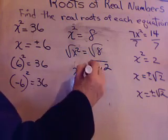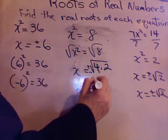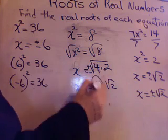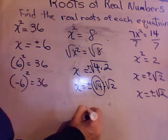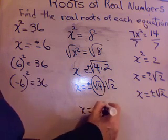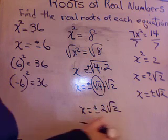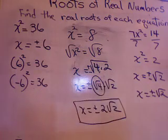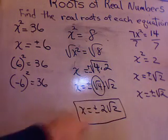So x could equal, forgot my plus or minus, plus or minus the square root of 4 times the square root of 2. I can do the square root of 4. So x equals plus or minus 2 root of 2. So some radicals can be simplified, the inside of them a little bit. So make sure you do that if the case arises.